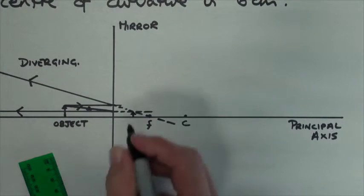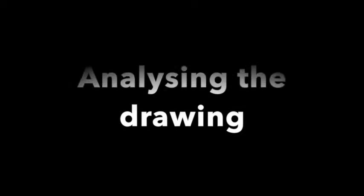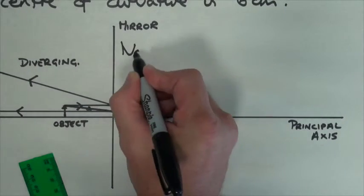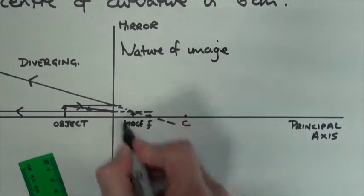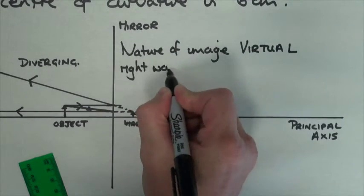So let's analyze what we've drawn. Well, firstly, the main point is that we know that the nature of the image is going to be virtual. Why? Because it's on the far side of the mirror. Secondly, it's the right way up.